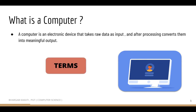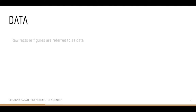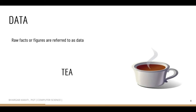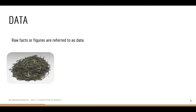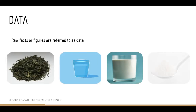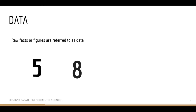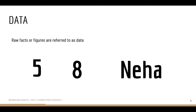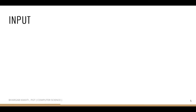The important terms here are data, input, and output. Let's start with data. Raw facts or figures are referred to as data. For example, if we want to prepare tea, the ingredients — tea leaves, water, milk, and sugar — are the data because they are raw facts. With respect to a computer system, data may be numbers like 5, 8, or a name like 'Neha'.